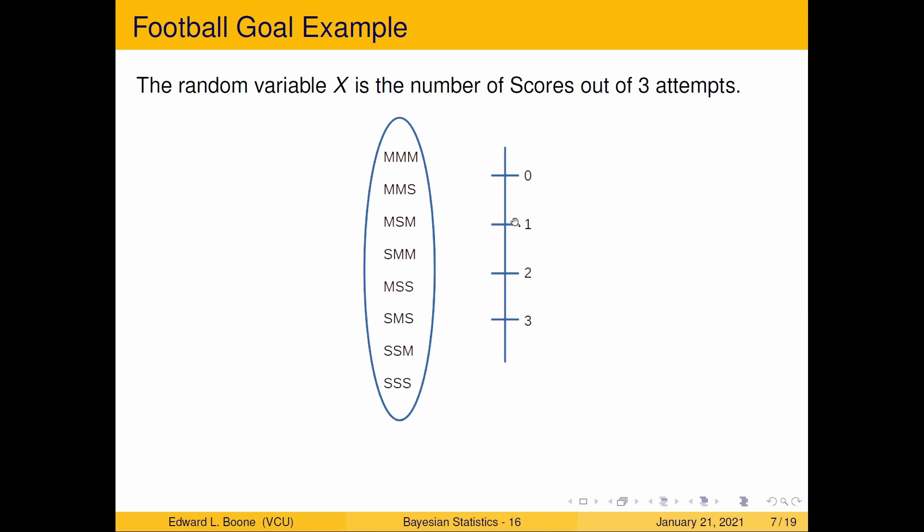So all we have to do is just assign the numbers. So here this first one gets assigned the value zero. And then these three all have one score in it, so one S in these. And these all get mapped to one. And then likewise these three all have two scores in them so they get mapped to two. And this one has all three scores and it gets mapped to three. So bingo, we've found a way to map these. Now, the idea of the random variable is it maps all the values. It's everything gets mapped.